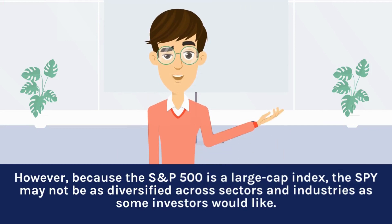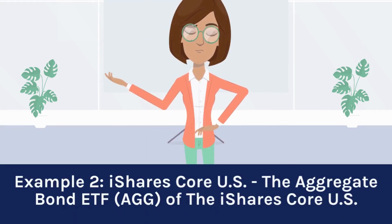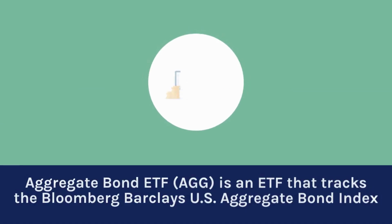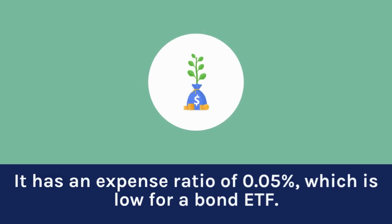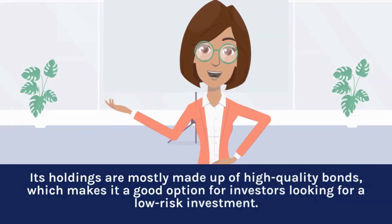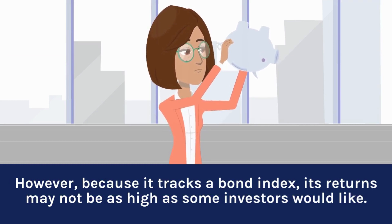Example two: the iShares Core US Aggregate Bond ETF, ticker AGG. The AGG is an ETF that tracks the Bloomberg Barclays US Aggregate Bond Index. It has an expense ratio of 0.05%, which is low for a bond ETF. Its holdings are mostly made up of high-quality bonds, making it a good option for investors looking for a low-risk investment. However, because it tracks a bond index, its returns may not be as high as some investors would like.